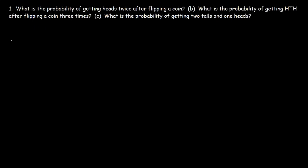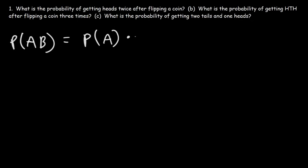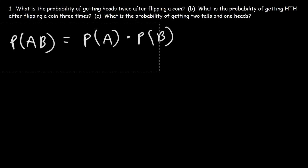In this video, we're going to focus on compound probability, but particularly of independent events. So let's say we wish to find a probability of two events occurring — event A and event B. If these events are independent, then the probability of these two events occurring is simply the product of the probability that event A will occur and then event B will occur.